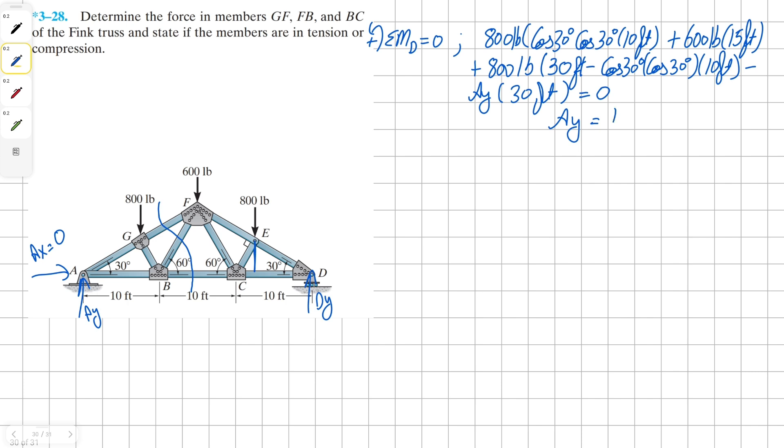So for Ay, we get a solution as 1,100 pounds. And since it's positive, this means we assumed our vector direction to be correct.